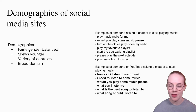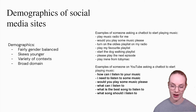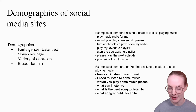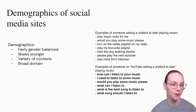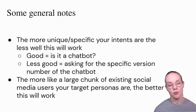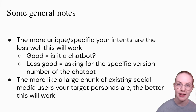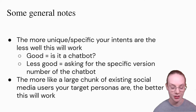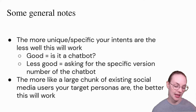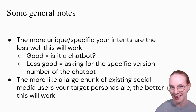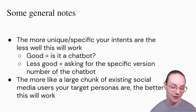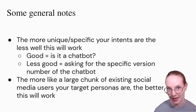On the other hand, something like YouTube is going to skew quite a bit younger. Some of the generated examples here are: 'how can I listen to your music?', 'I need to listen to the music,' 'what song should I listen to?' Some general notes about using this type of approach: the more unique and specific your intents are, the less well this will work, because there's less likely to be a lot of relevant examples in the training data. Something like asking whether or not this is a chatbot is probably likely to get pretty good results, but something like asking for the specific version number of the chatbot, perhaps not as likely to get good results.